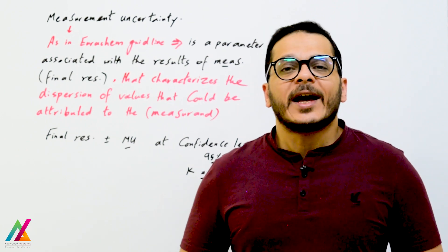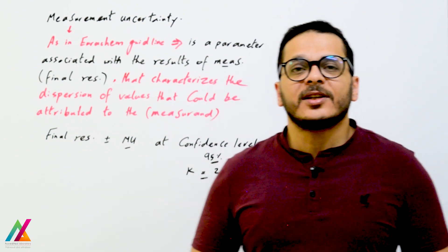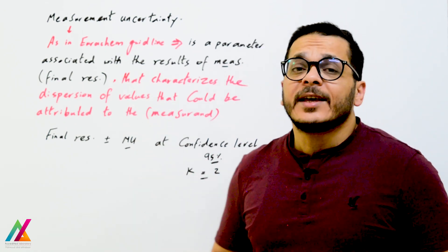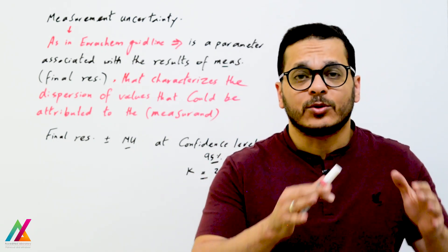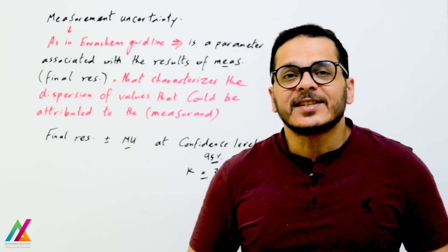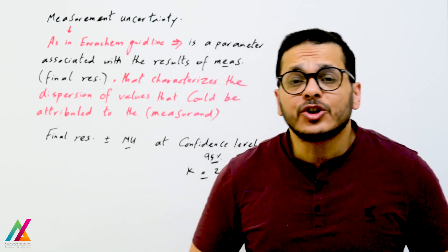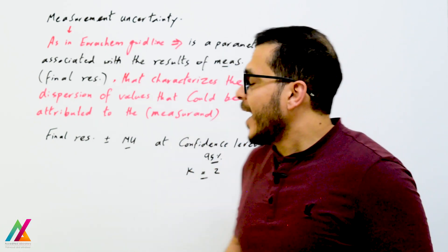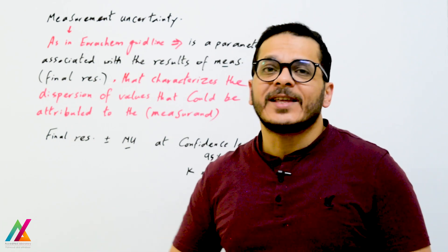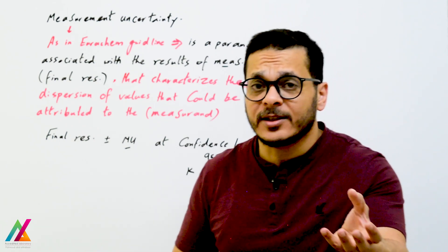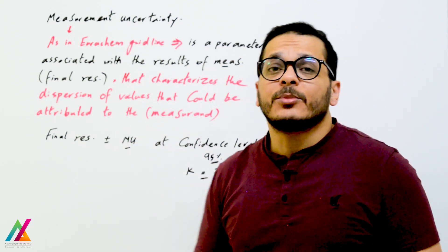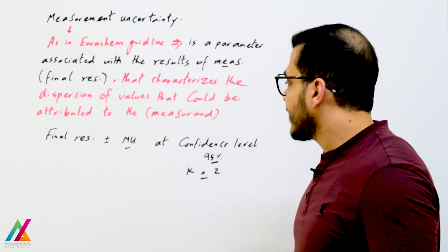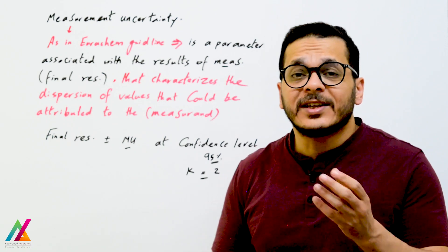Welcome back to this lecture on how to calculate measurement uncertainty for microbiological analysis. Measurement uncertainty, as defined in the Eurachem guideline, is a parameter associated with the final result that characterizes the dispersion of values — the variability between results that could be attributed to the measurement of the analyte to be quantified. The final result is expressed as the analyte value plus or minus measurement uncertainty.